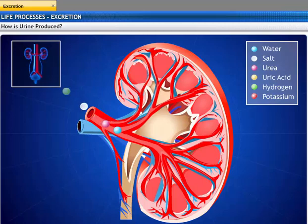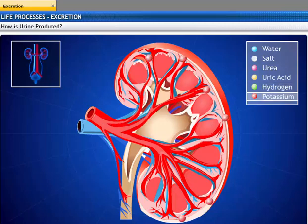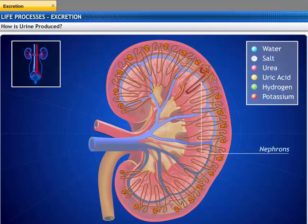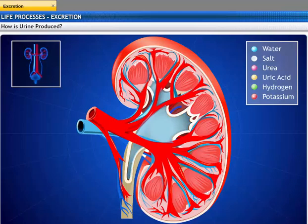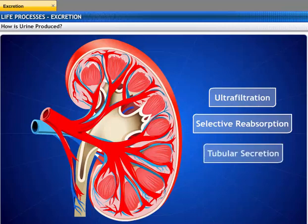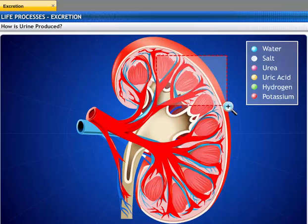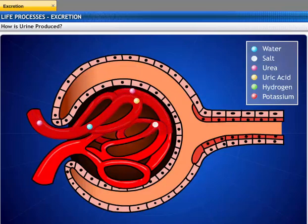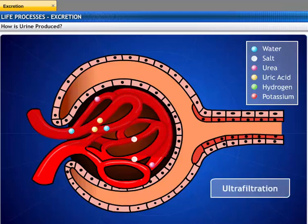Waste products in the body are transported by the blood to the kidneys through the renal arteries. Unwanted wastes and toxic products such as urea, uric acid, hydrogen, and potassium ions are left behind in the kidneys. These excretory products are removed by nephrons in the form of a liquid called urine. The kidney performs three functions leading to urine formation: ultrafiltration, selective reabsorption, and tubular secretion. Nephrons filter minerals, wastes, and water but retain red cells, proteins, and large molecules. This process is known as ultrafiltration.